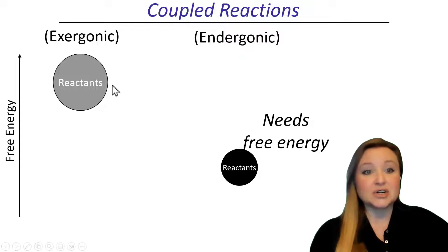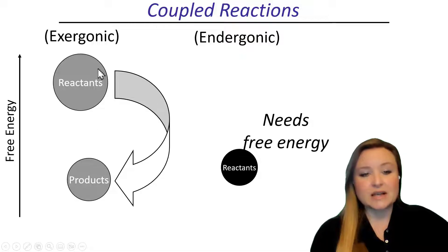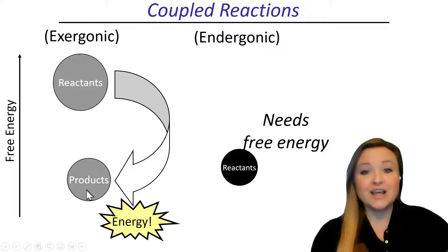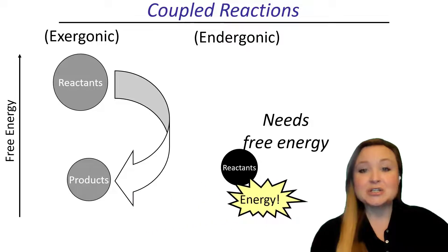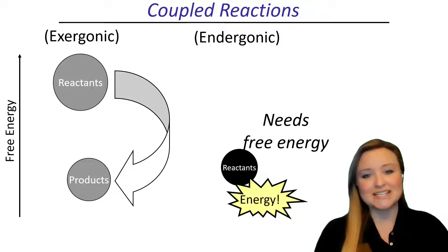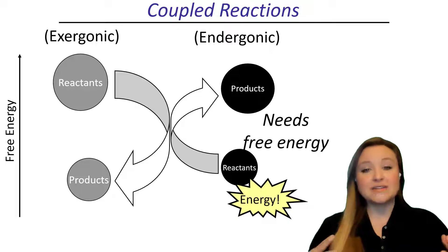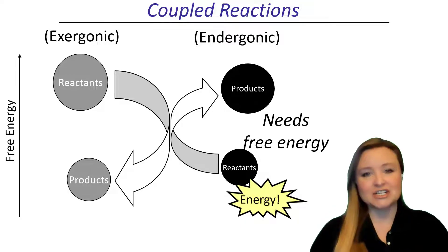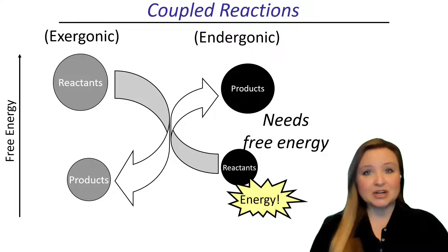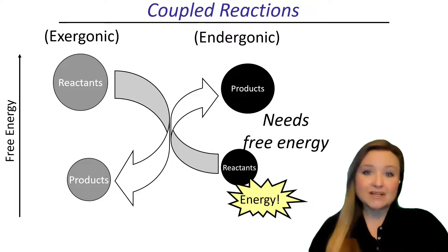The exergonic reaction's reactants have a lot of free energy, so it's spontaneous — they react to form products that have lower free energy, since free energy is released in the process. In a coupled reaction, that free energy is transferred to the reactants of the endergonic reaction. Now energized, those reactants have enough free energy to react and form products. For every endergonic reaction that needs free energy, we need an exergonic reaction that releases free energy, and all endergonic reactions of living organisms are made possible by coupling reactions in this way.